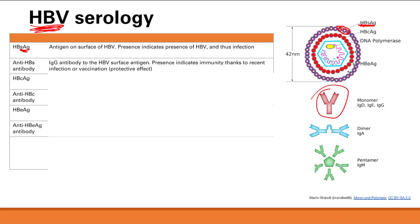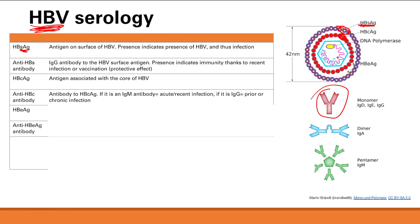Presence of anti-hepatitis B surface antibody indicates either a recent resolved infection or having been vaccinated. You do not have this during an active hepatitis B infection. Next is hepatitis B core antigen (HBcAg) — an antigen inside hepatitis B. You can have an antibody against that as well, either IgM or IgG. IgM means an acute or recent infection; IgG means either a prior infection or a chronic infection.